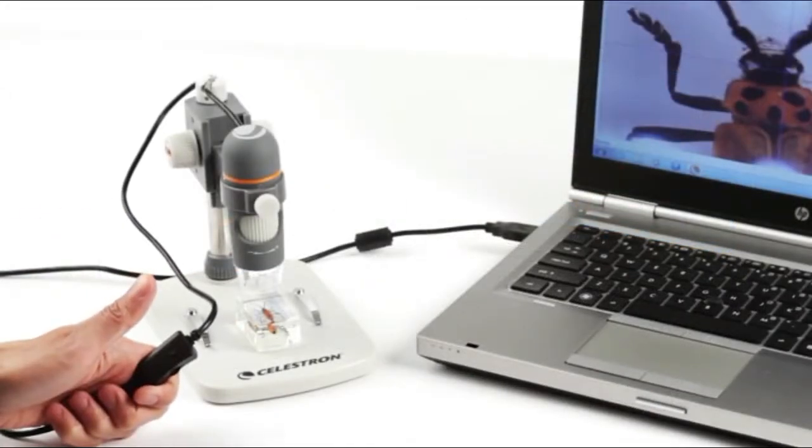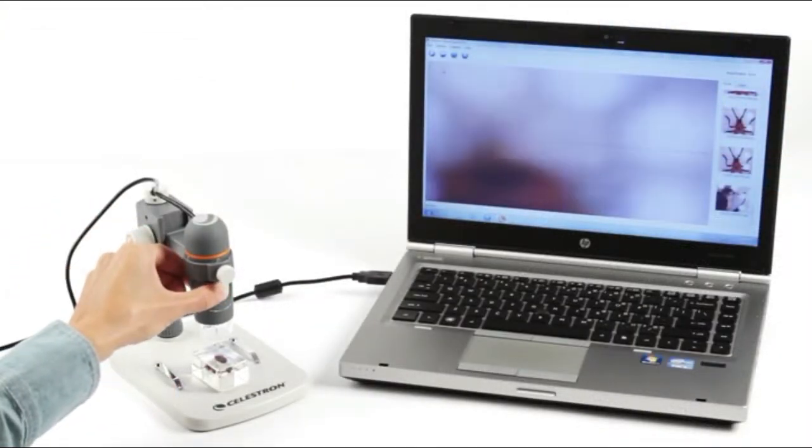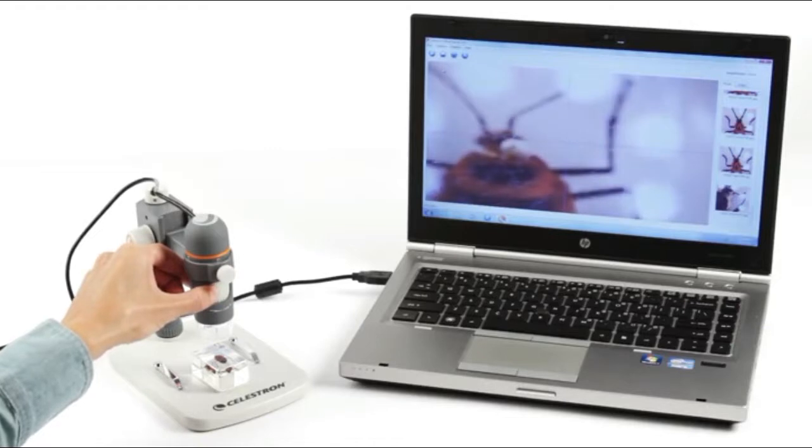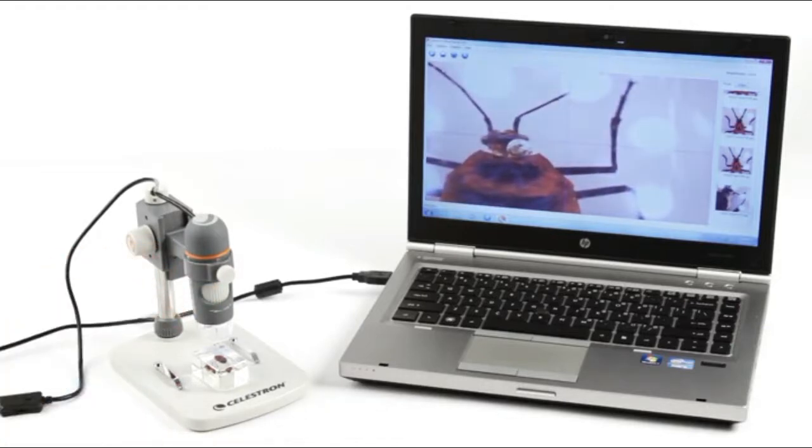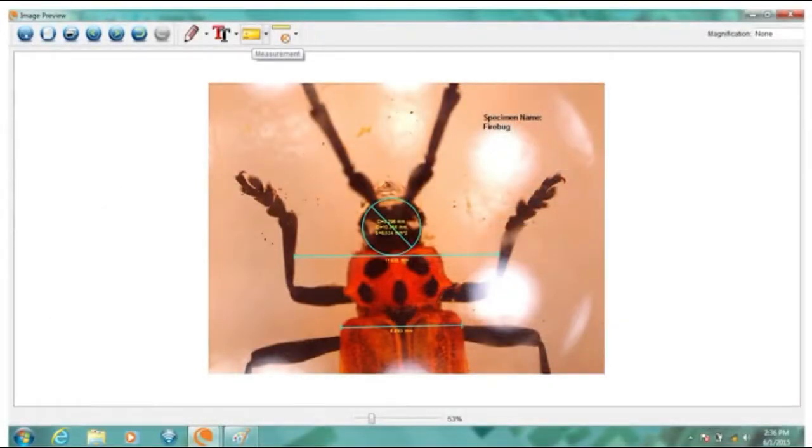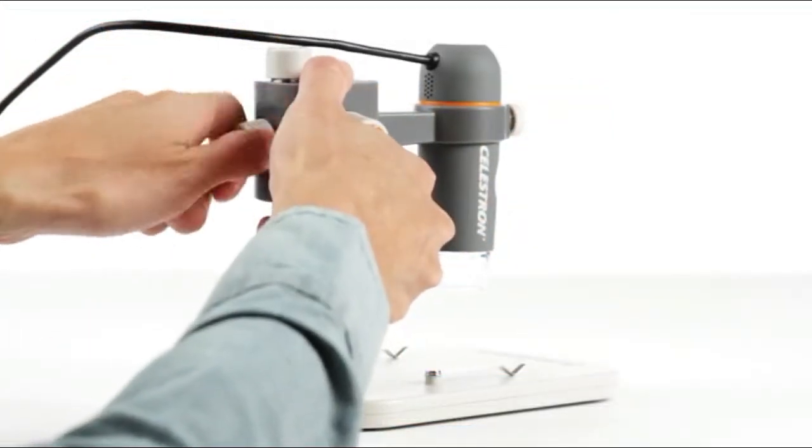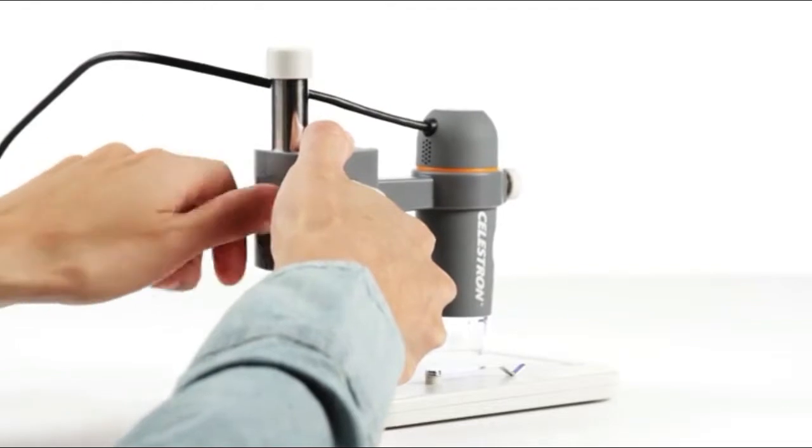Included micro capture Pro software for Mac or Windows based PC is a powerful tool for capturing high-resolution images, VGA video, time-lapse animations, and more. Plus you can measure the size of your specimens, make notes and save images directly to your hard drive. Another great feature only available with the handheld digital microscope Pro is the easily adjustable sturdy stand.